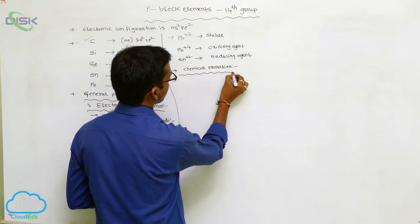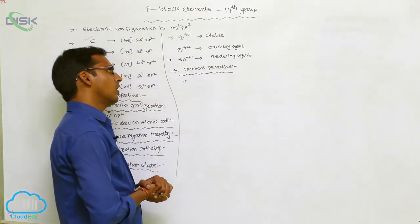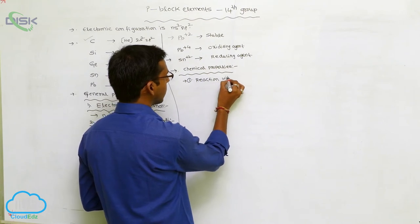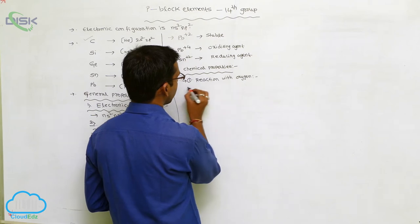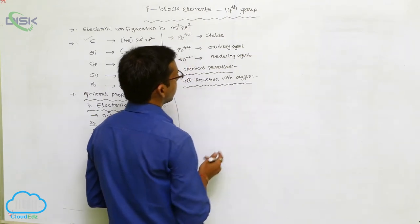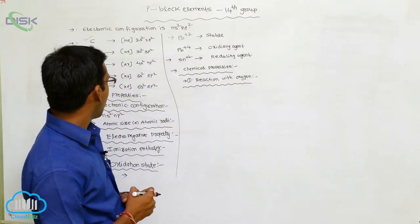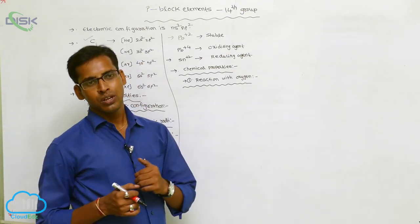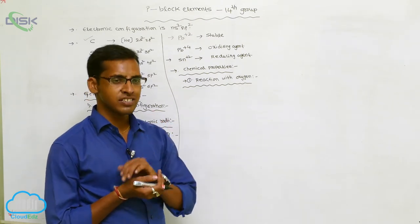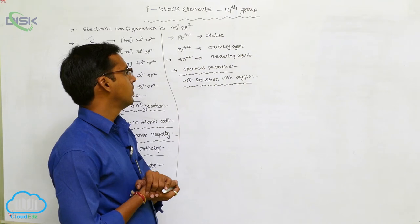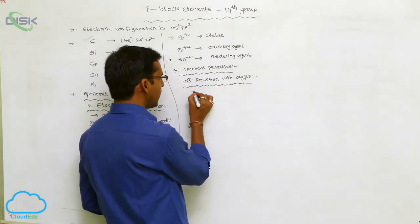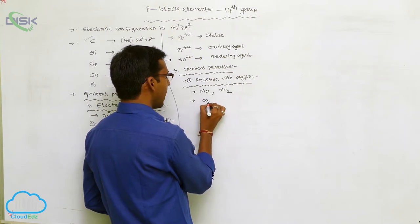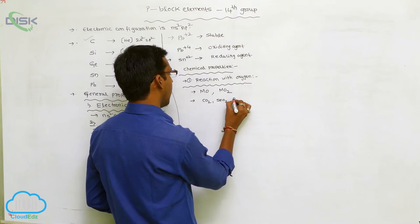Chemical properties of Group 4A elements: reaction with oxygen. Group 4A elements — carbon, silicon, germanium, tin, and lead — react with oxygen to produce oxides. Different types of oxides are formed, with the general formula MO or MO₂. For example, carbon dioxide, tin oxide, and lead oxide.